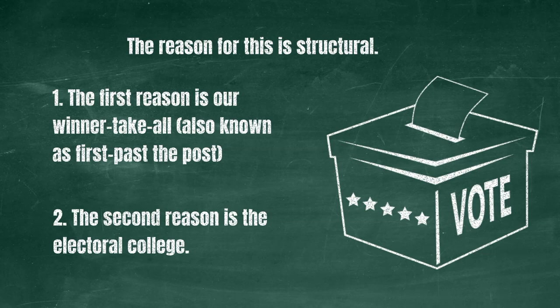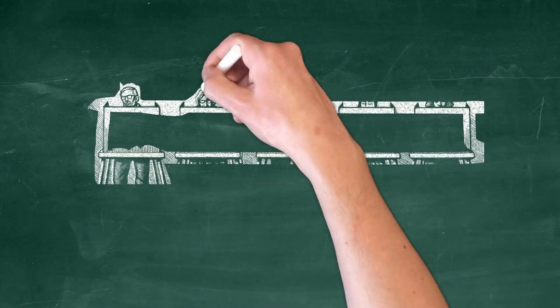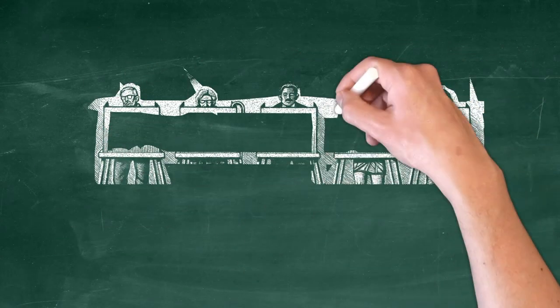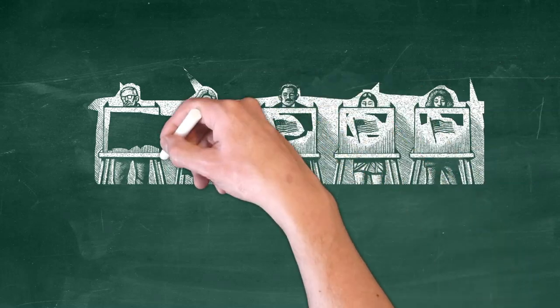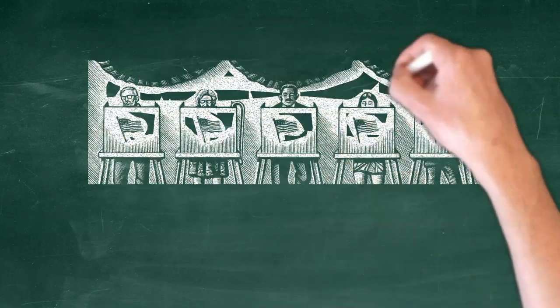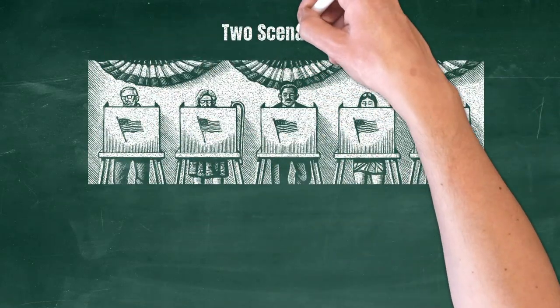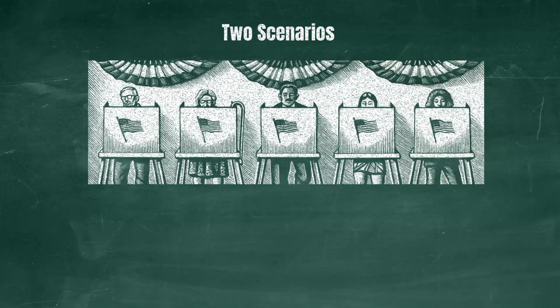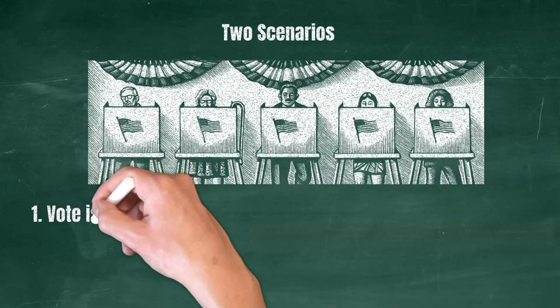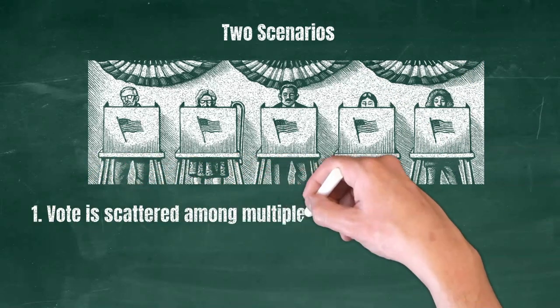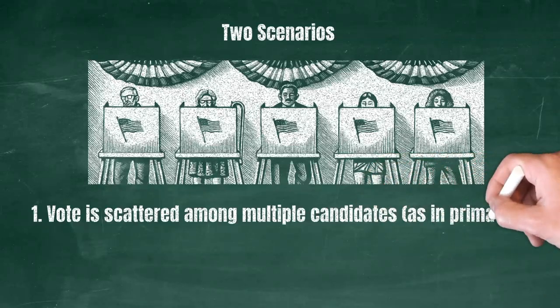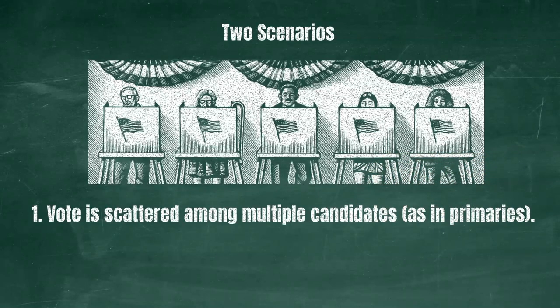One of the main insights from political science is that electoral systems shape how many dominant parties develop in a given place. Consider how this would work for American elections. In a situation where a given candidate needs only one more vote than everyone else to win, two scenarios may develop. If voters cannot tell candidates apart, voting patterns will tend to spread across many potential contenders, as happens regularly in primaries.